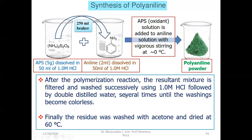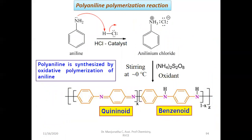Let us look at the reaction involved during the synthesis of polyaniline. Aniline is actually a Lewis base. When you add 2 ml of aniline into HCl, it undergoes a neutralization reaction. Aniline is a Lewis base and HCl is a Bronsted acid. HCl splits into H+ and Cl−. The H+ forms a bond with the lone pair of electrons of the nitrogen atom of the amine group in aniline, forming the anilinium ion, which combines with Cl− to form aniline chloride salt. This is acid plus base equals salt — a neutralization reaction.